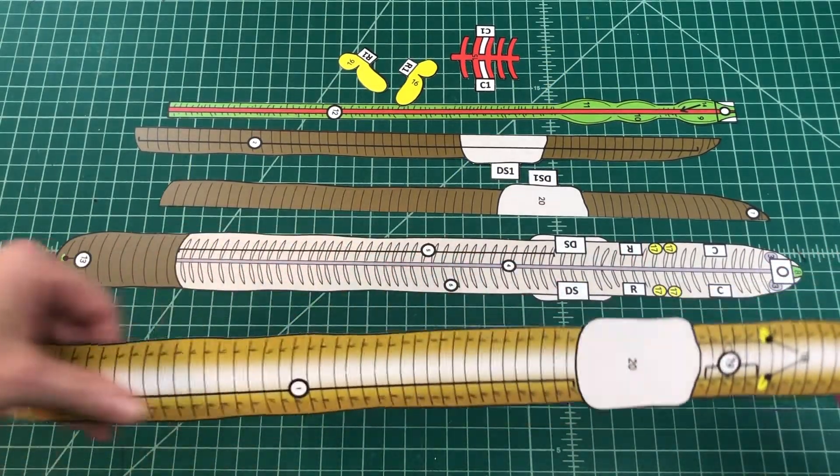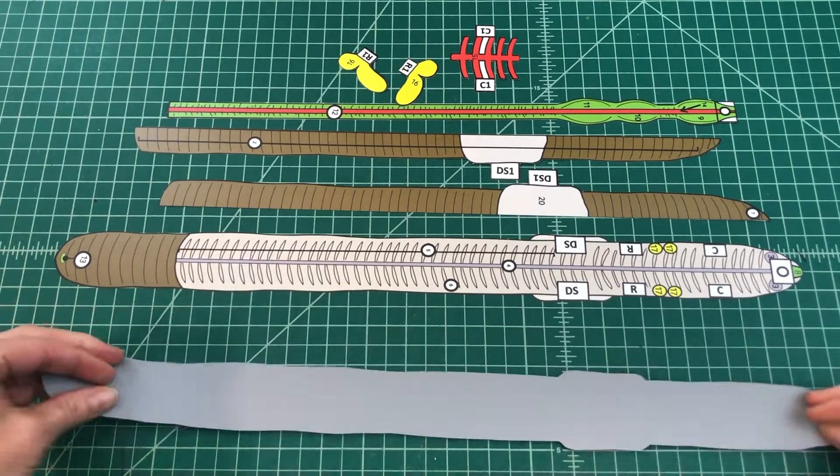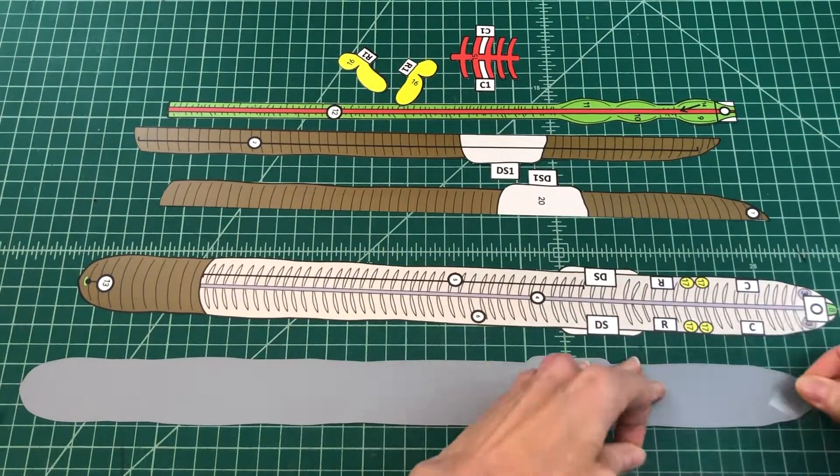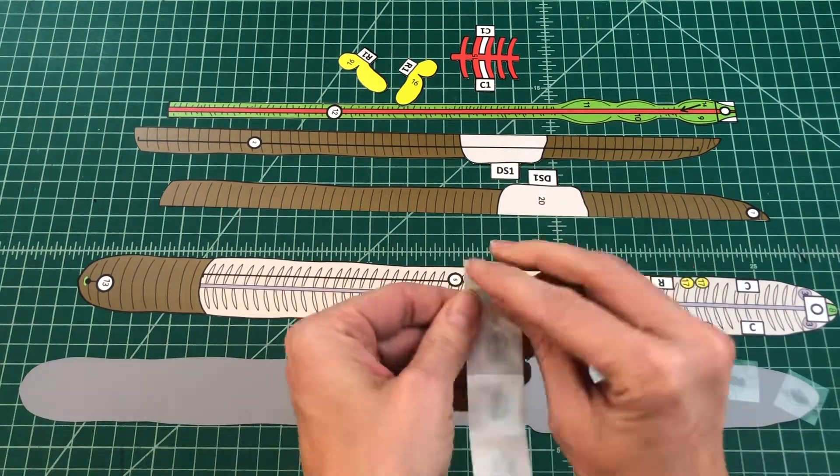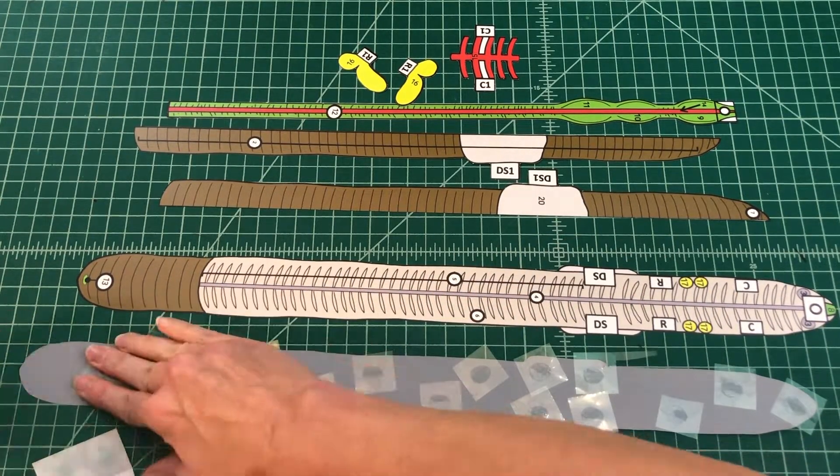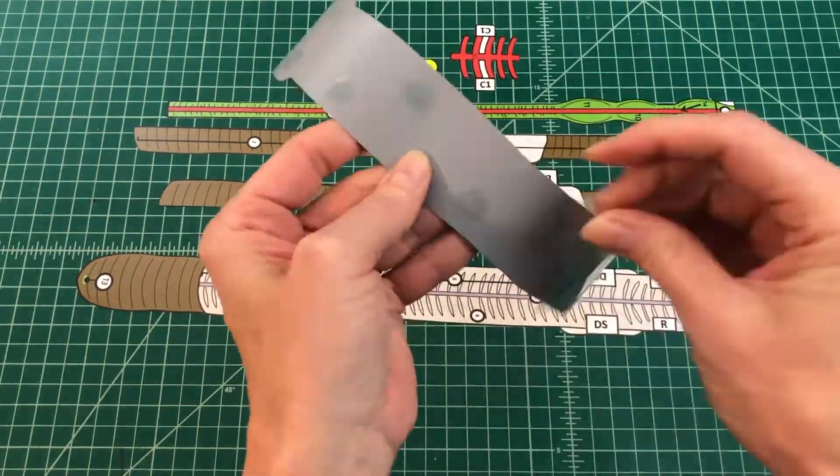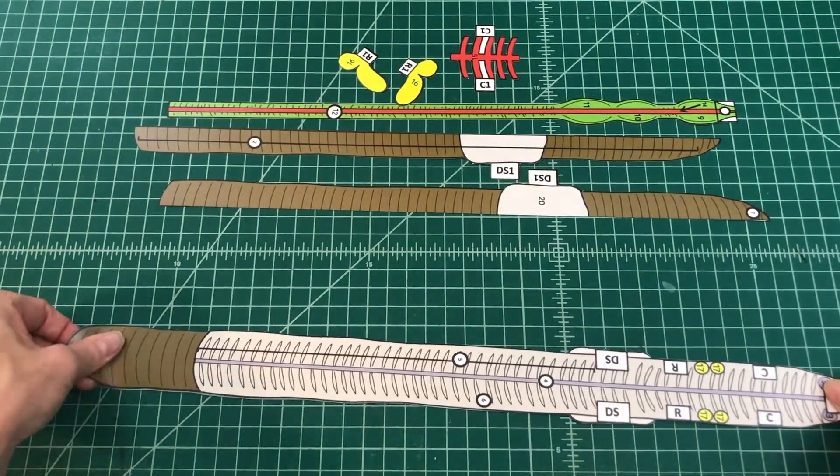Step one: Find the internal worm piece. Apply glue to the back of the internal worm piece and align it to the backside of the ventral worm piece so that their edges meet. When attached properly, you should be able to see the inside and ventral surface of the worm.